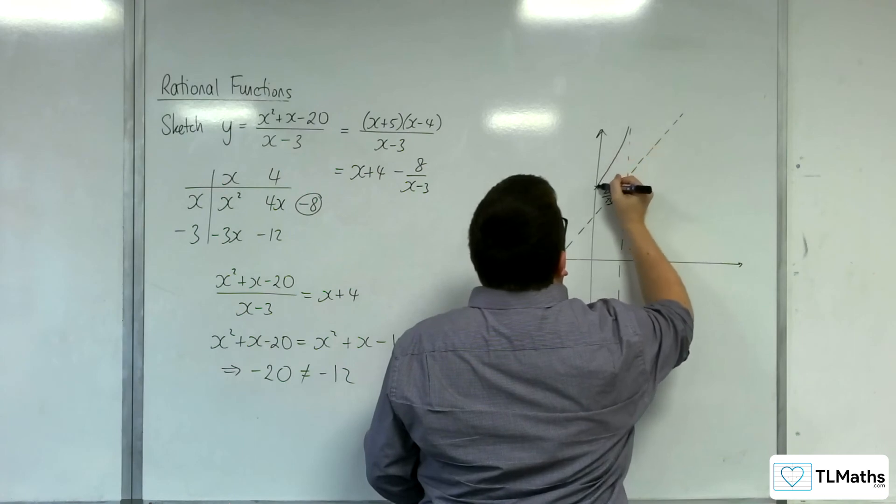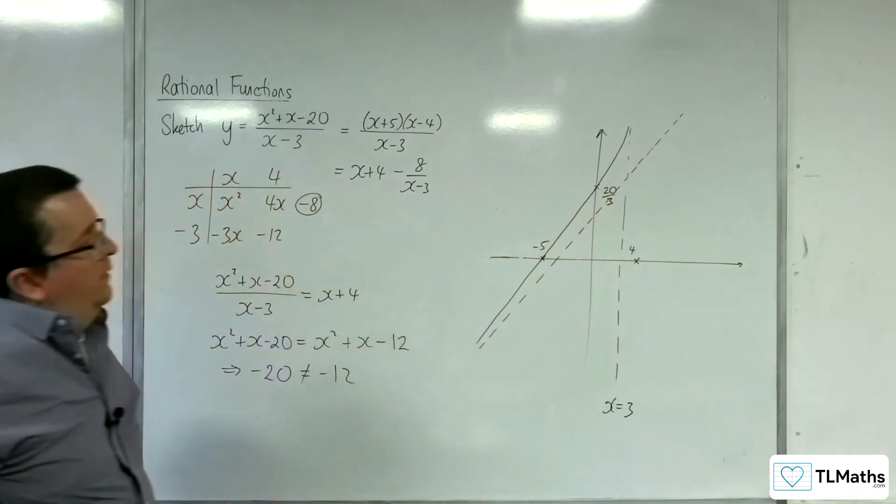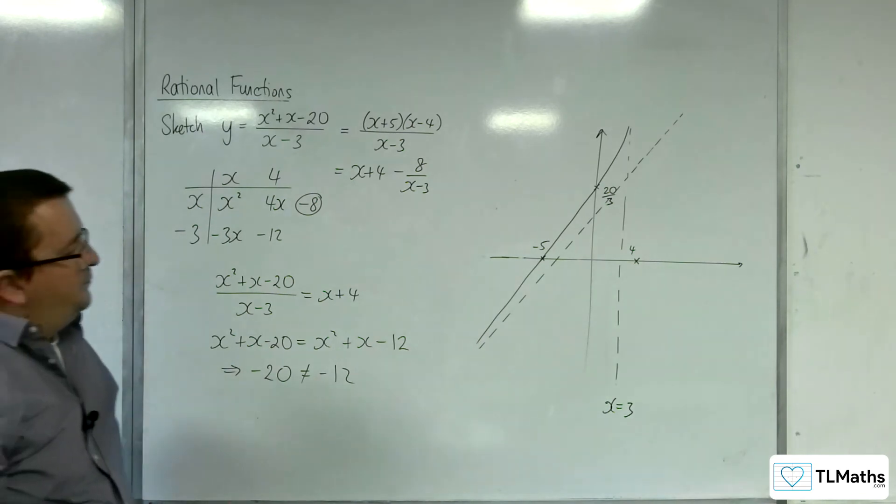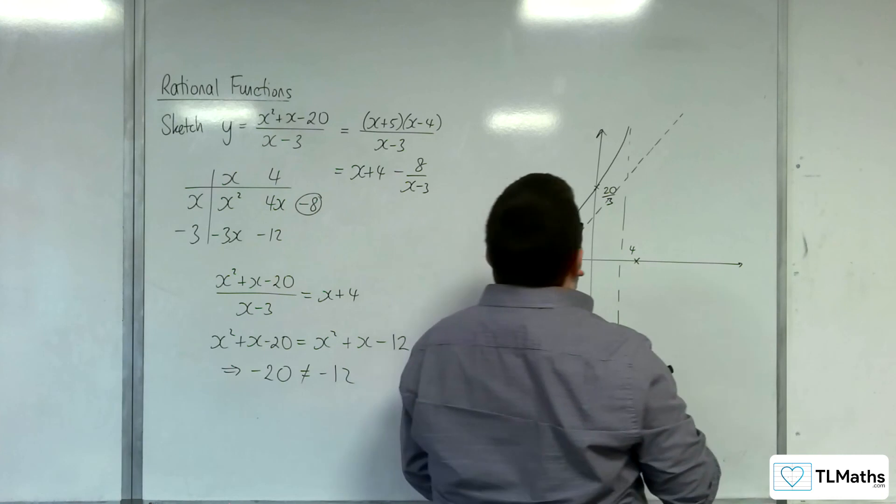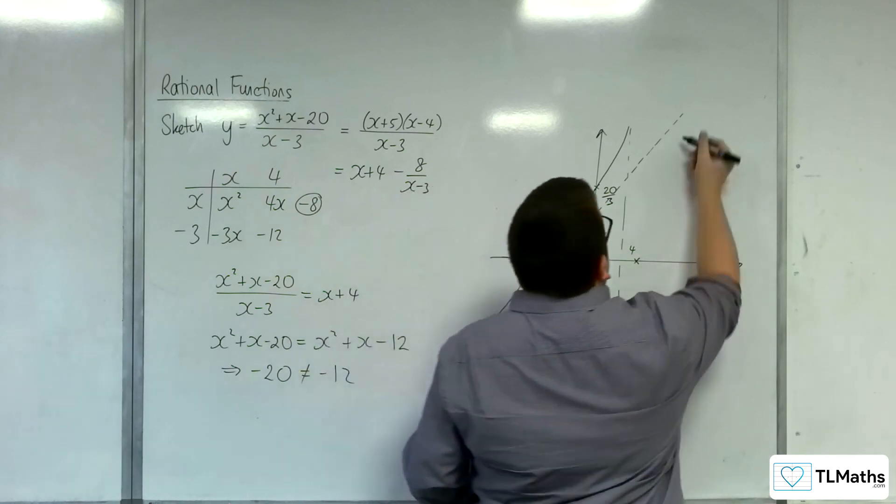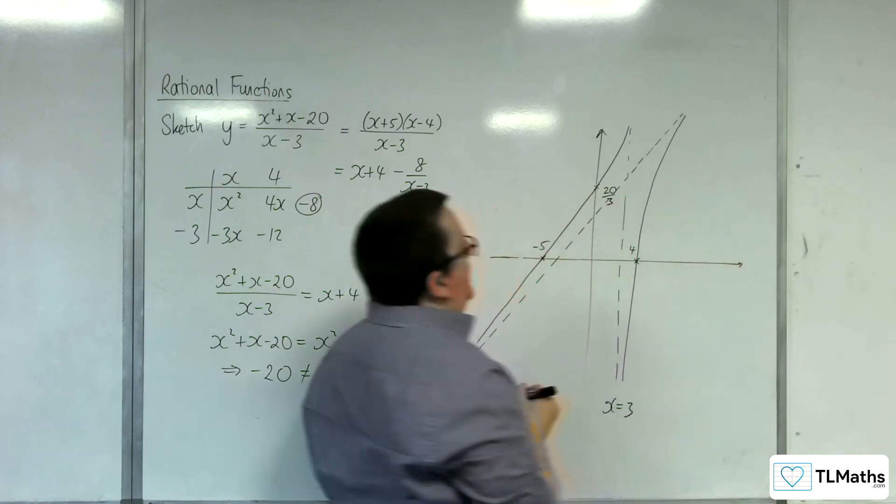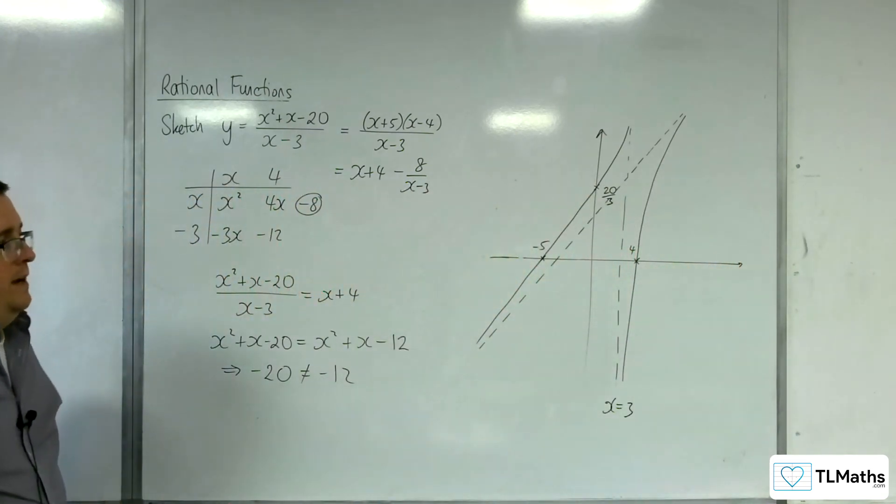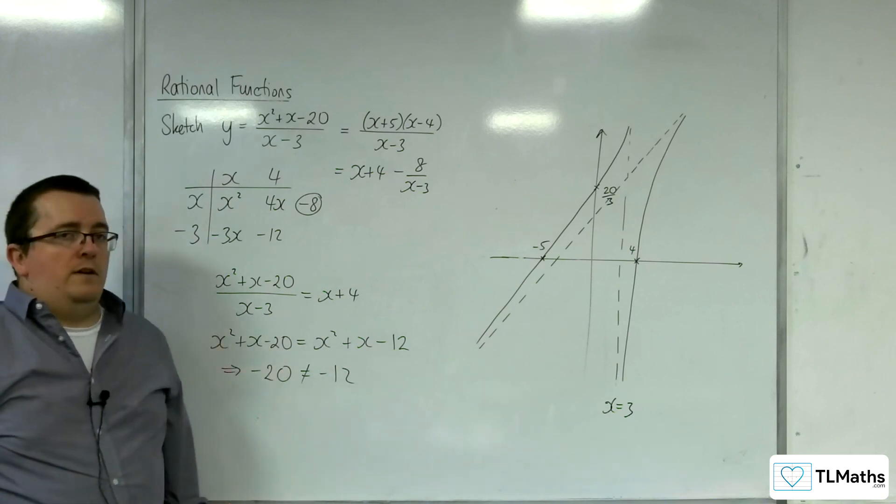And so, it must be coming down here, through those two points, then tending towards the asymptote. Difficult to kind of get the shape on it there. And then, as for here, the curve must be doing something like that. And so, this is the shape of the curve.